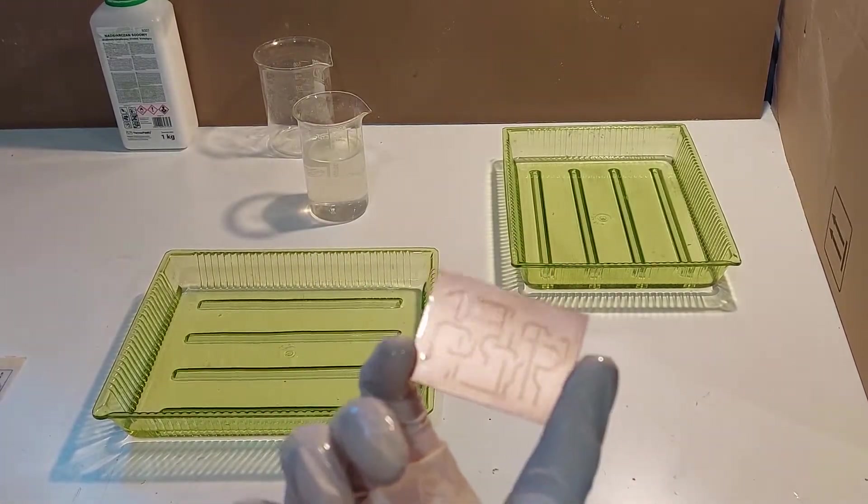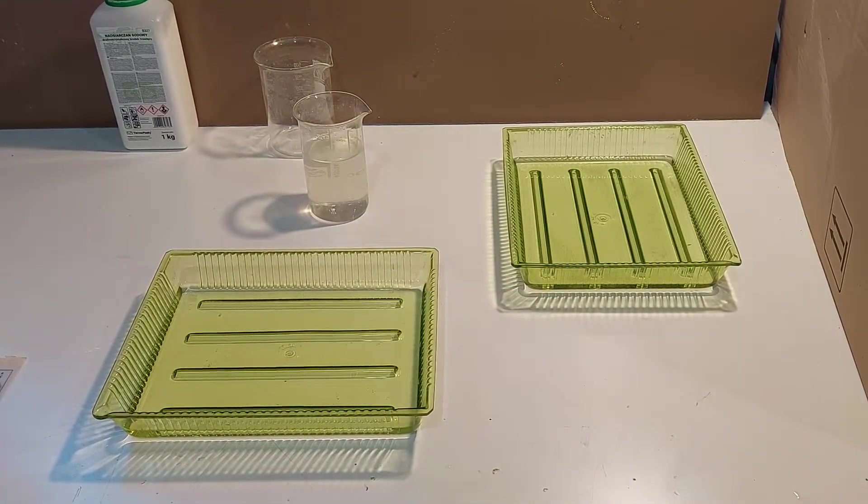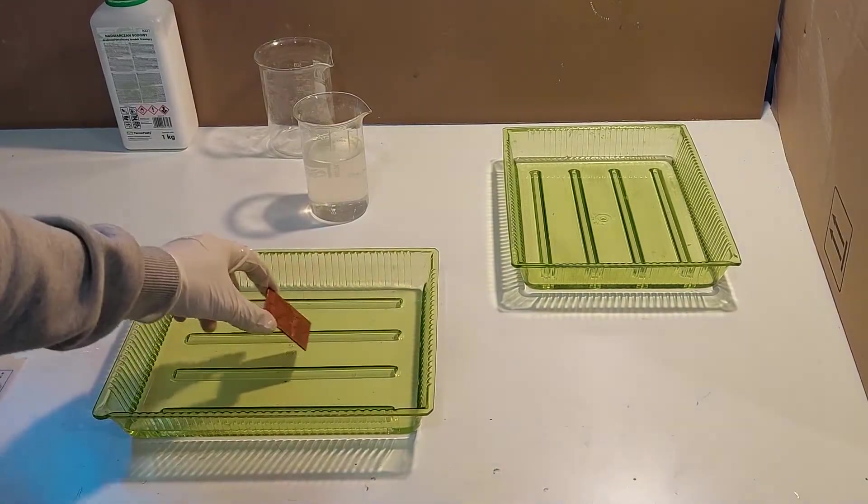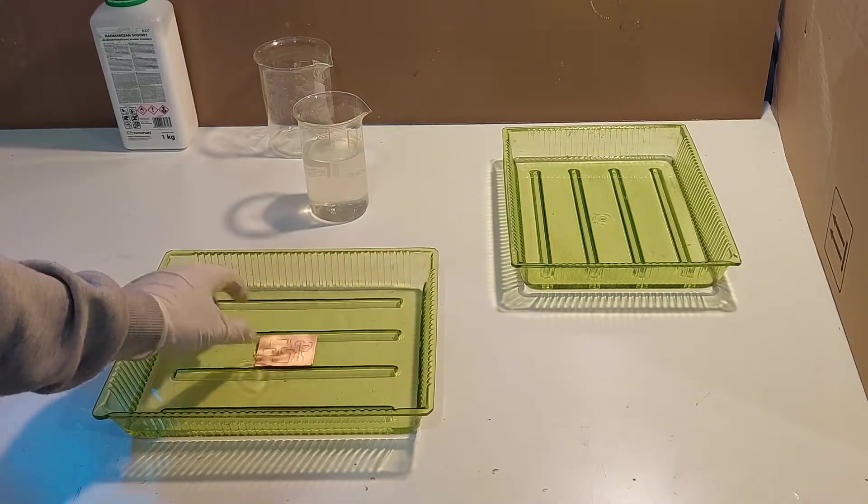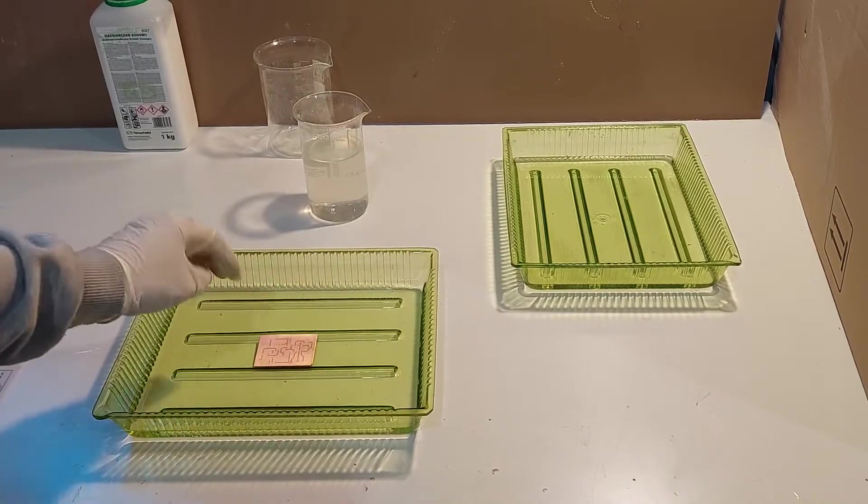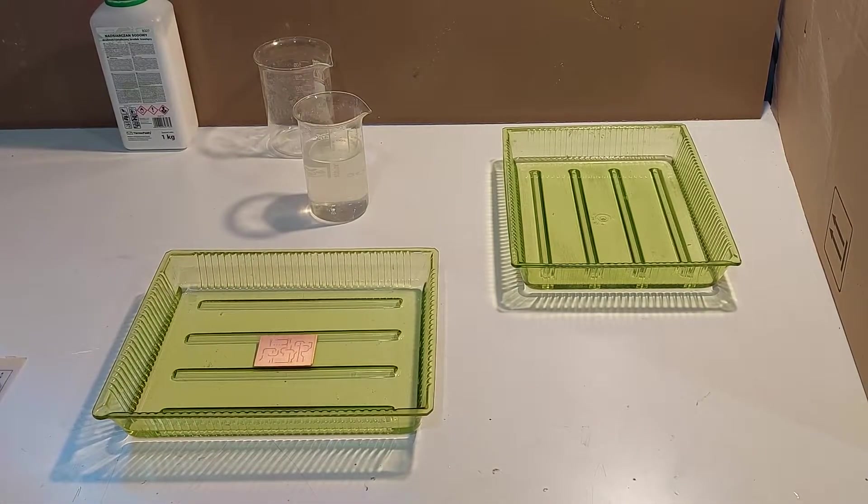Now wash the board with some water and then we can start etching. The board is now washed from the developer and now we can start etching. So I just drop it into the container with the etchant. The etching time depends on the size of the board. But for something like this, I'd say about maybe half an hour, maybe a bit more. I just have to look at it and maybe agitate it a bit, turn it around and stuff. And it works.